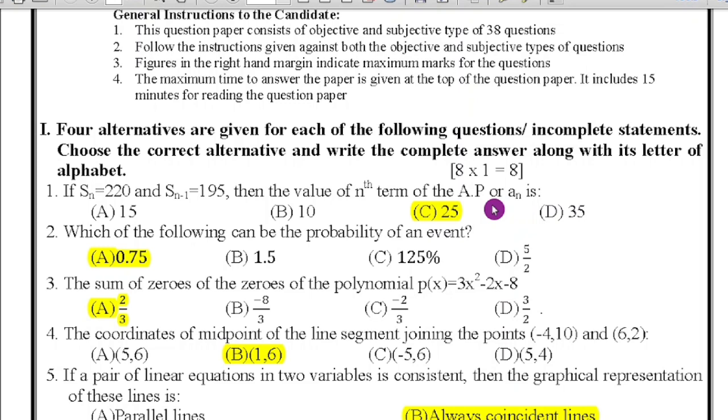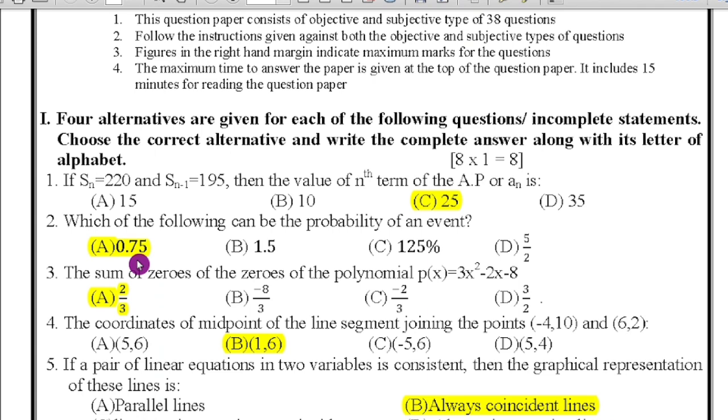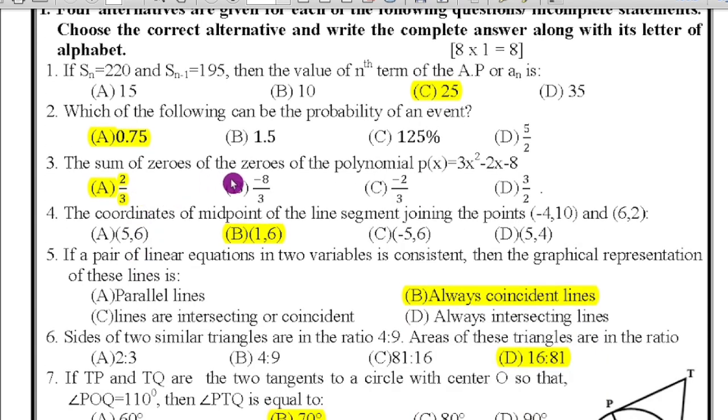Second question: which of the following can be probability of an event? In the given four options the probability of the event will be 0.75. Question number 3: the sum of zeros of the polynomial P(x) = 3x² - 2x - 8. They are asking the sum of zeros of the polynomial, that is alpha plus beta equals minus B by A. Therefore minus of -2 divided by 3. Therefore minus into minus, so plus 2 by 3 option is the right answer.